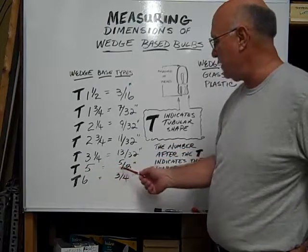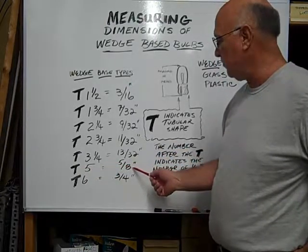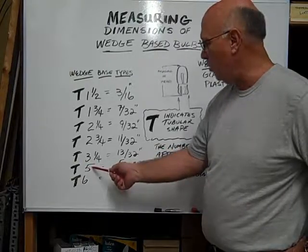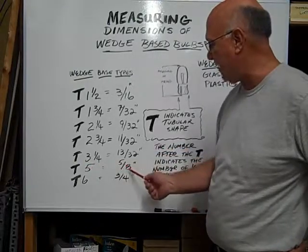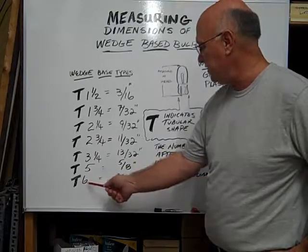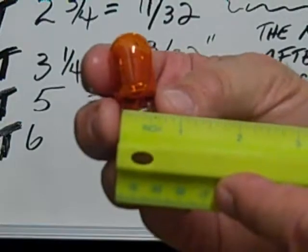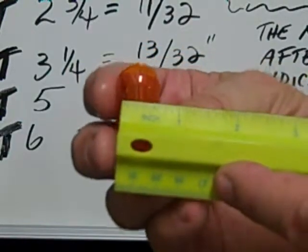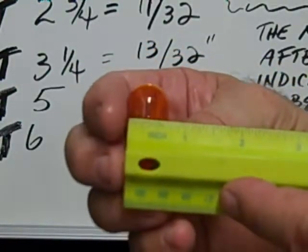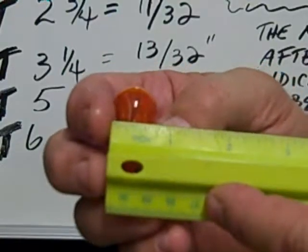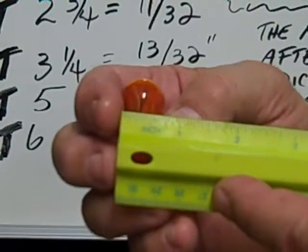A T five is equivalent to five eighths of an inch. As you see, that's a whole number so it's actually five eighths. So a T six would be three quarters of an inch. This is a T six diameter bulb. If I put it on the ruler, it measures three quarters of an inch. That's six eighths. This is a T six.